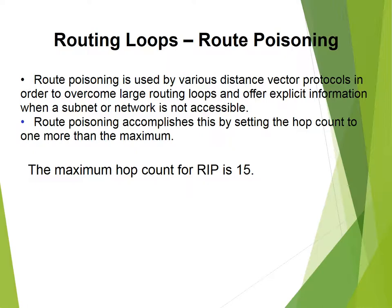Route poisoning is used by various distance vector protocols in order to overcome large routing loops and offer explicit information when a subnet or network is not accessible. Route poisoning accomplishes this by setting the hop count to one more than the maximum. The maximum hop count for RIP is 15.